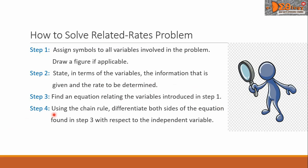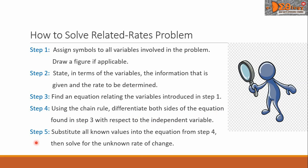Step 4: Using the chain rule, differentiate both sides of the equation found in Step 3 with respect to the independent variable. Here, the independent variable is time. Step 5: Substitute all known values into the equation from Step 4, then solve for the unknown rate of change.